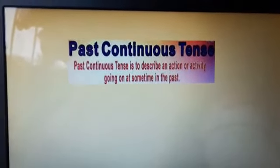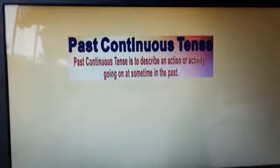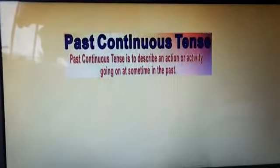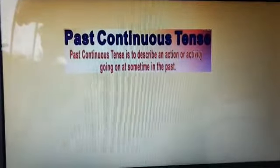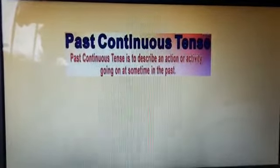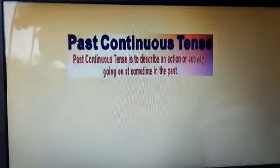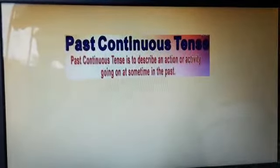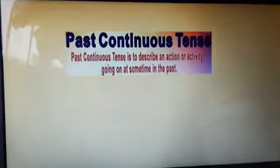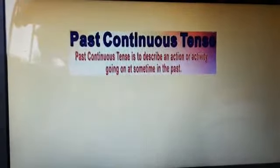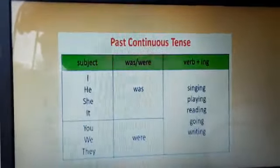Now I will tell you the rules about past continuous tense. It describes an action or activity going on at some time in the past. It tells you about actions which were going on — you have to stress on 'going on'. Those are included in past continuous tense.